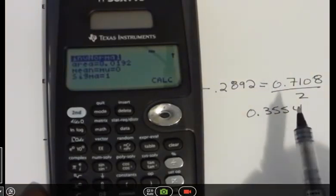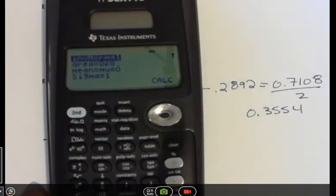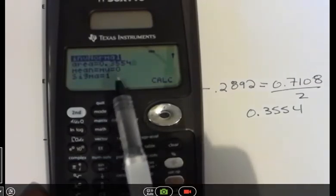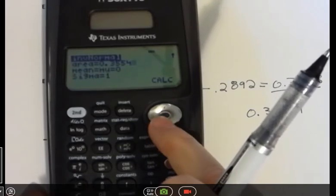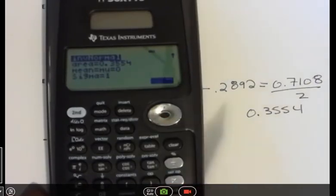The area that I'm interested in is 0.3554. You don't need to put the 0 in there. But anyway, the mean and the sigma are automatically 0 and 1. And that's what I want for this problem. So now I can hit calculate.